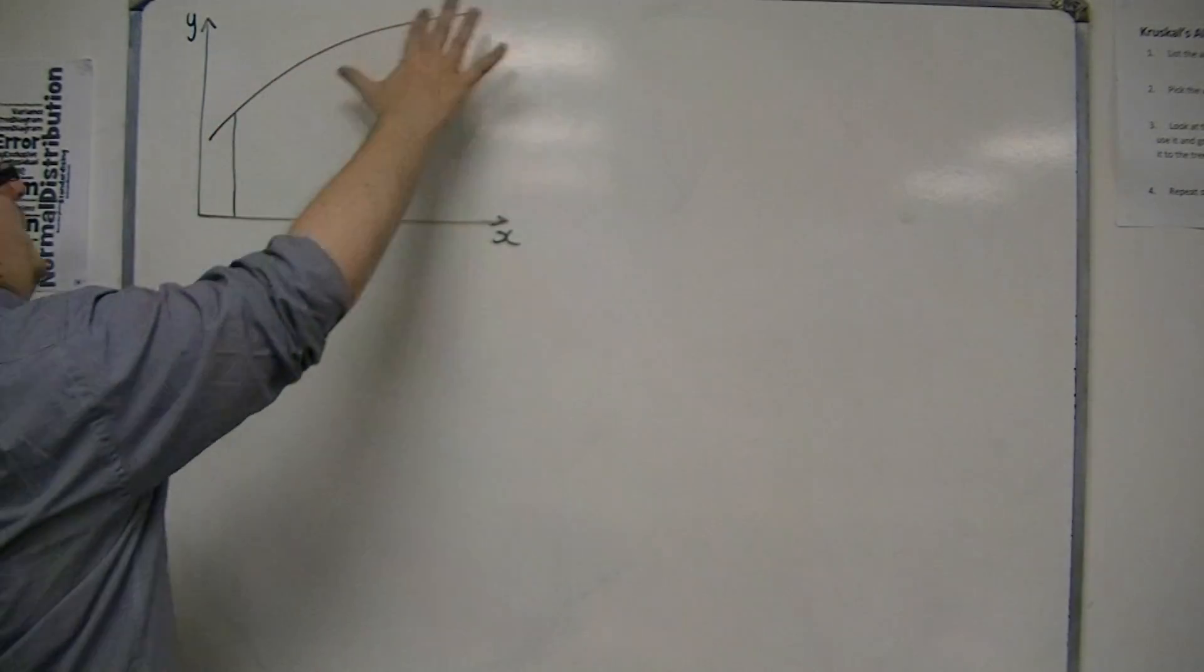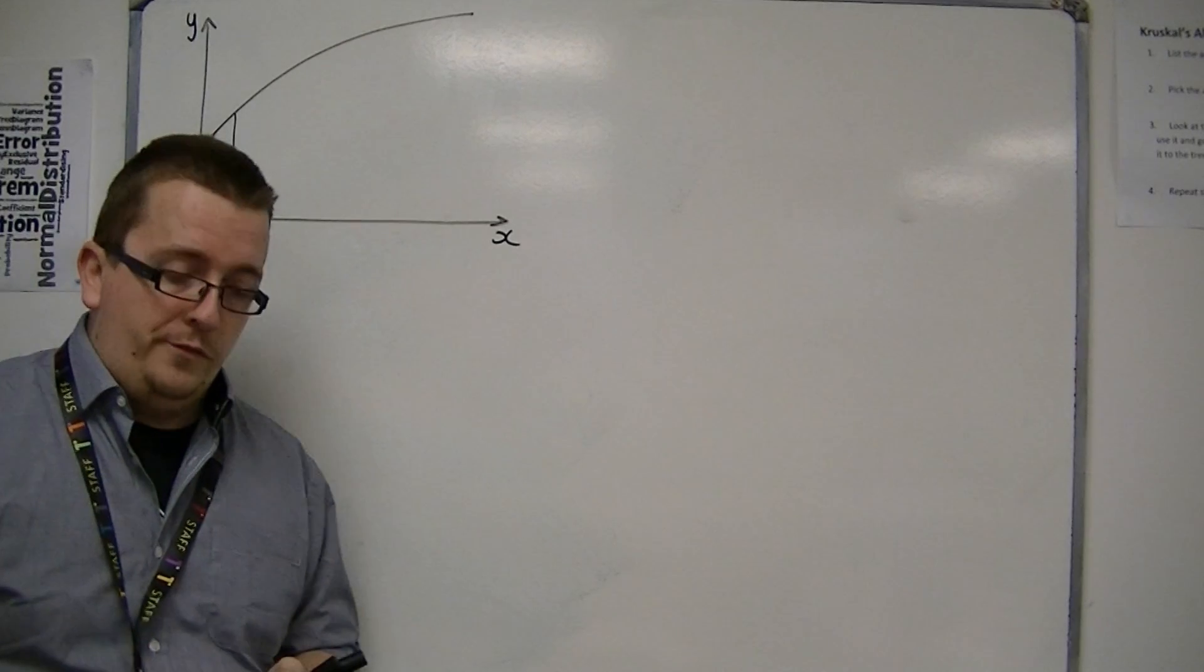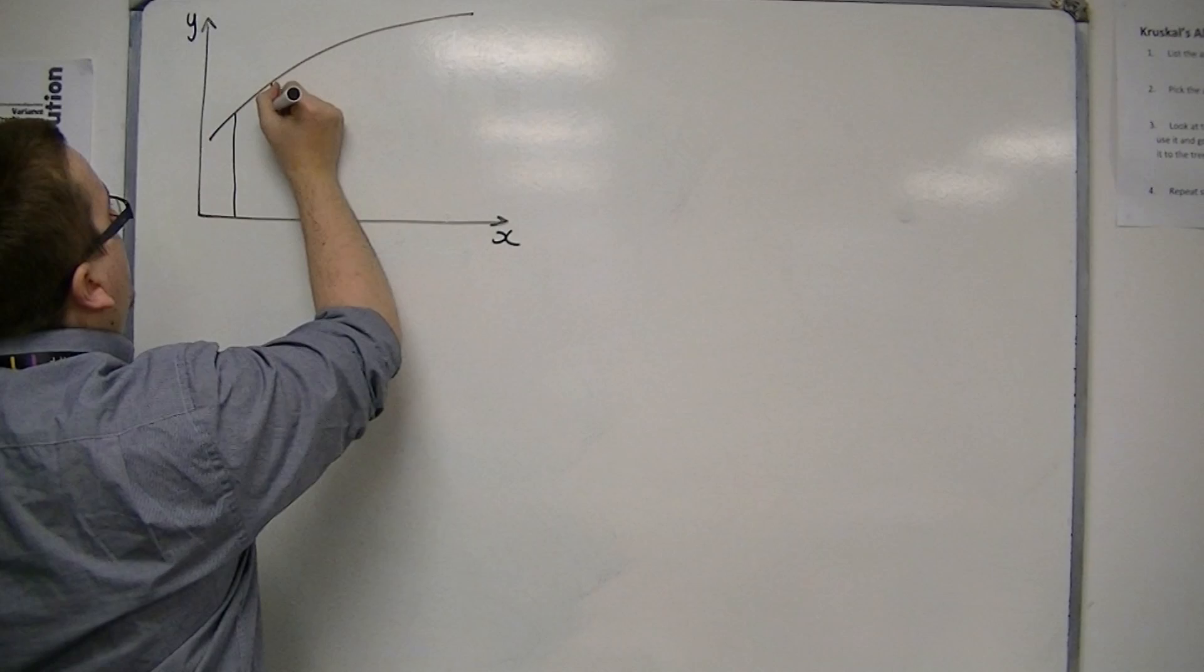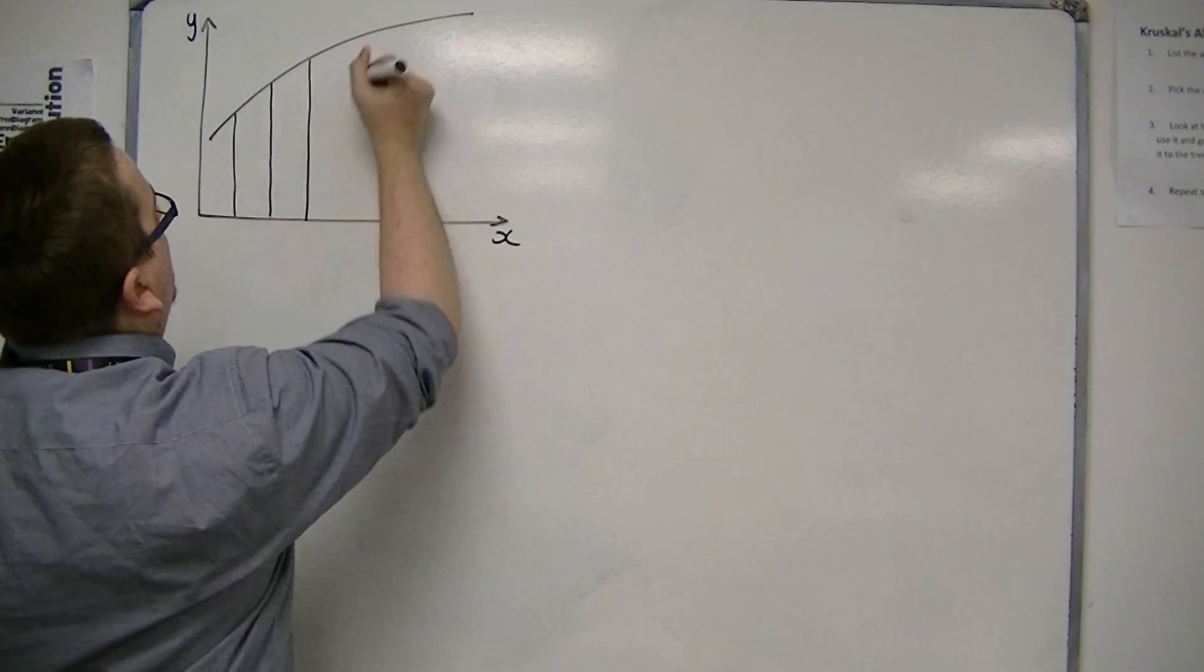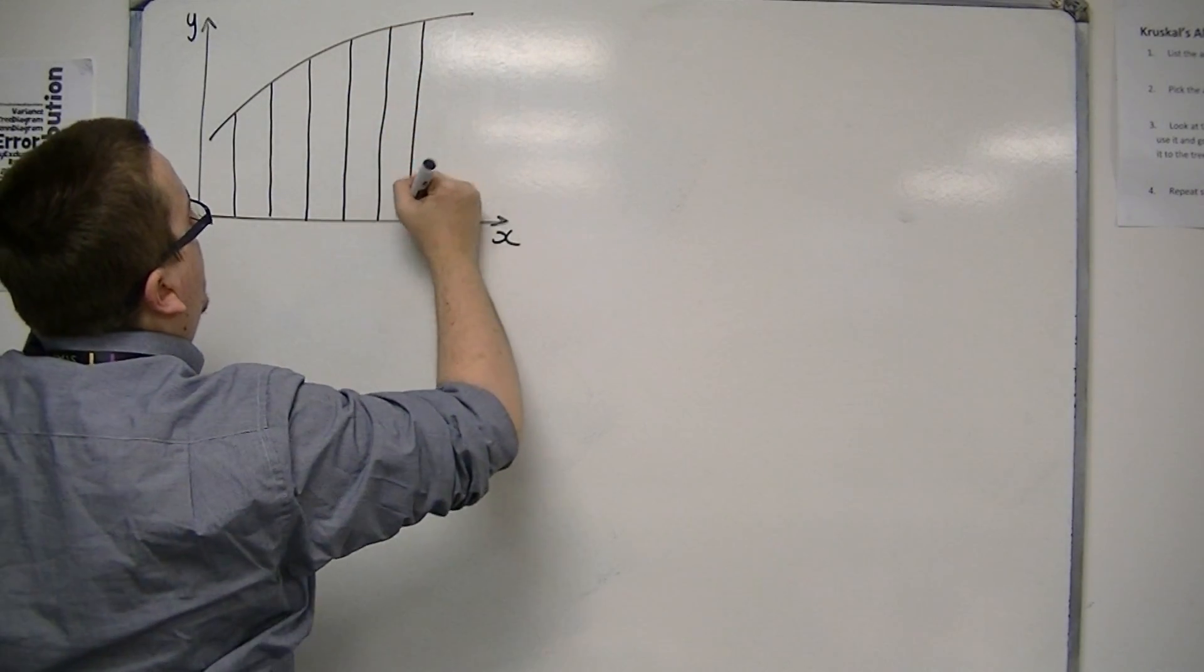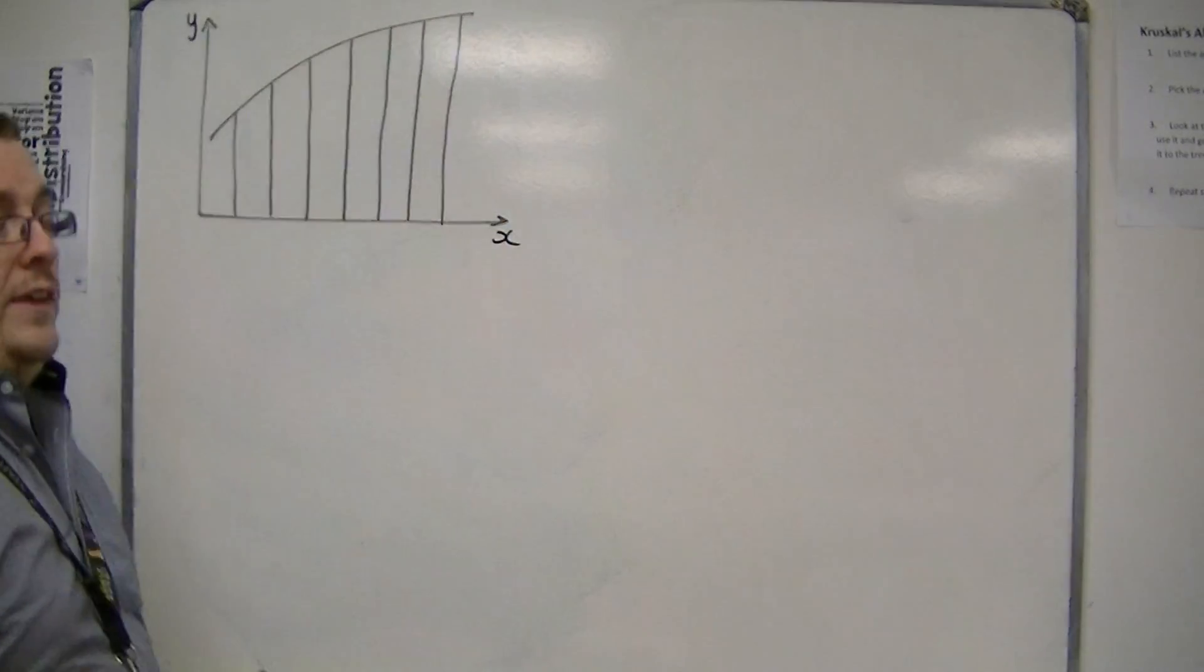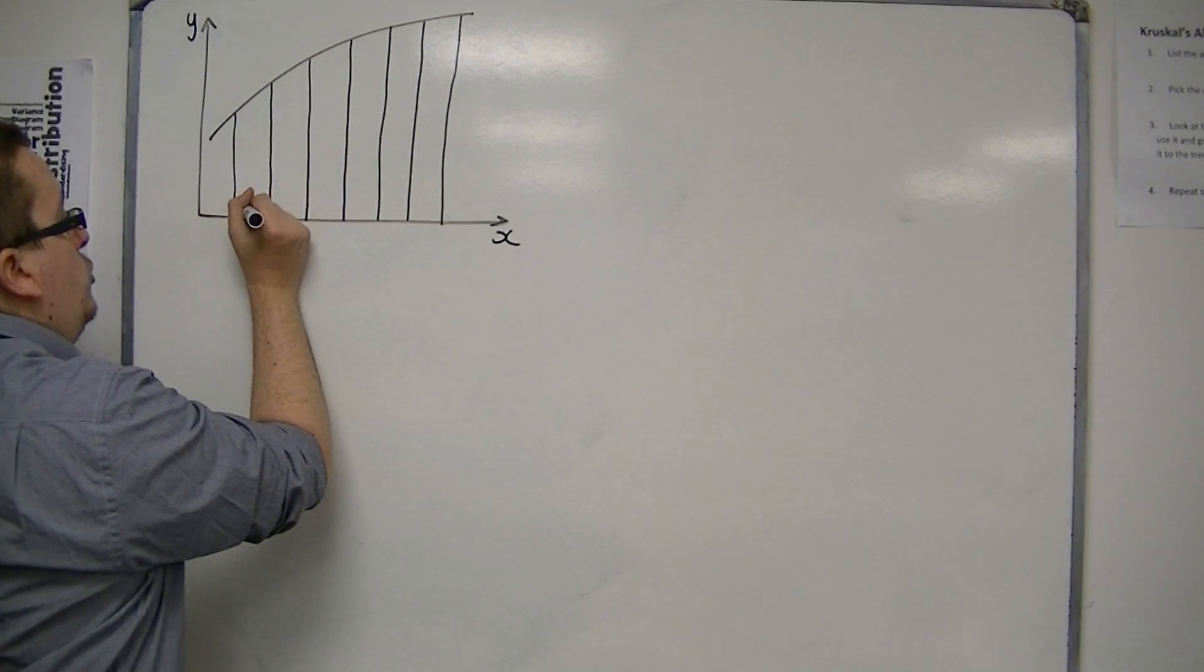So let's say that there is this curve, and I want to work out an area under this curve. And what I might do is I might split the area up into strips. So let's say I split it up into this many strips. And each one of the strips has exactly the same width. So let's say that the width is h.